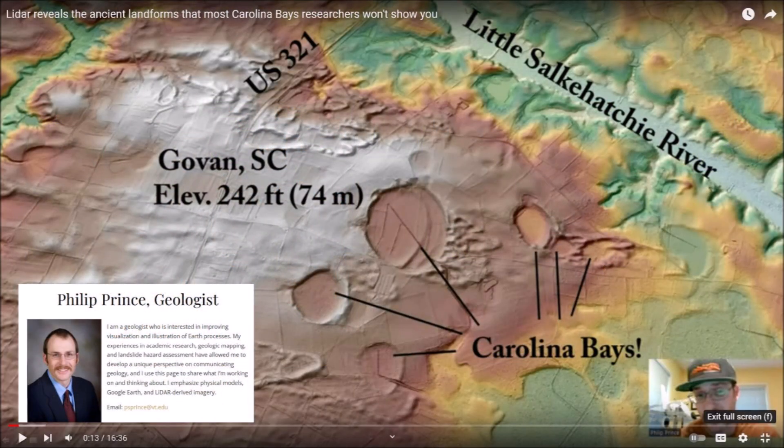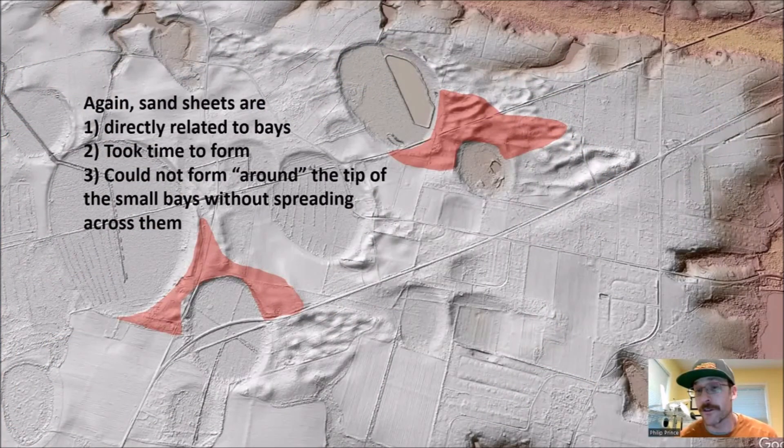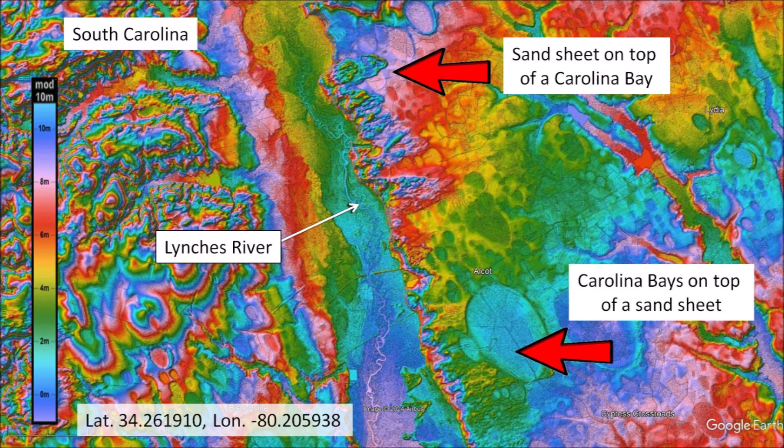More recently, Philip Prince, a geologist at Virginia Tech, has shown that winds significantly influence the landscape where the Carolina Bays are found around Govan, South Carolina. Prince points out that the windblown sand sheets and the Carolina Bays interacted. In some cases the sand sheets cover the Carolina Bays, and in other cases the Carolina Bays cover the sand sheets. There are many examples illustrating that strong winds were associated with the emplacement of the Carolina Bays.